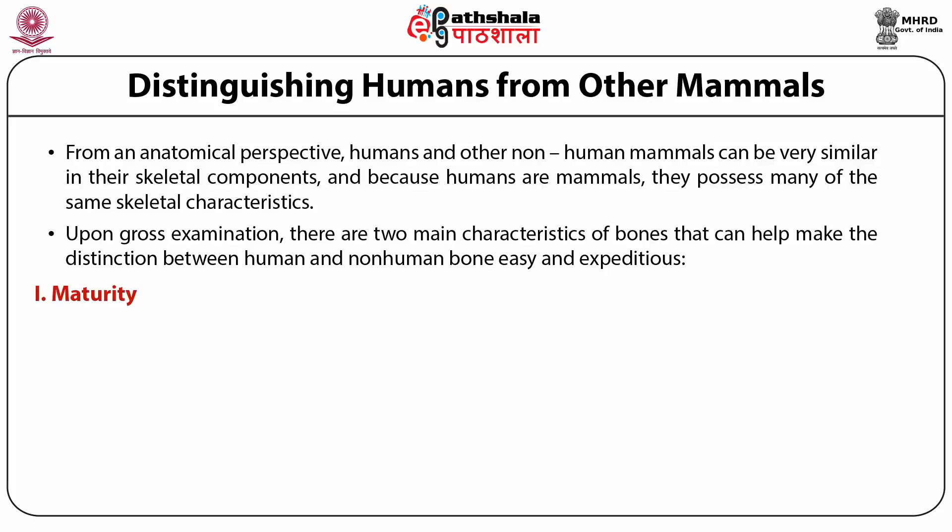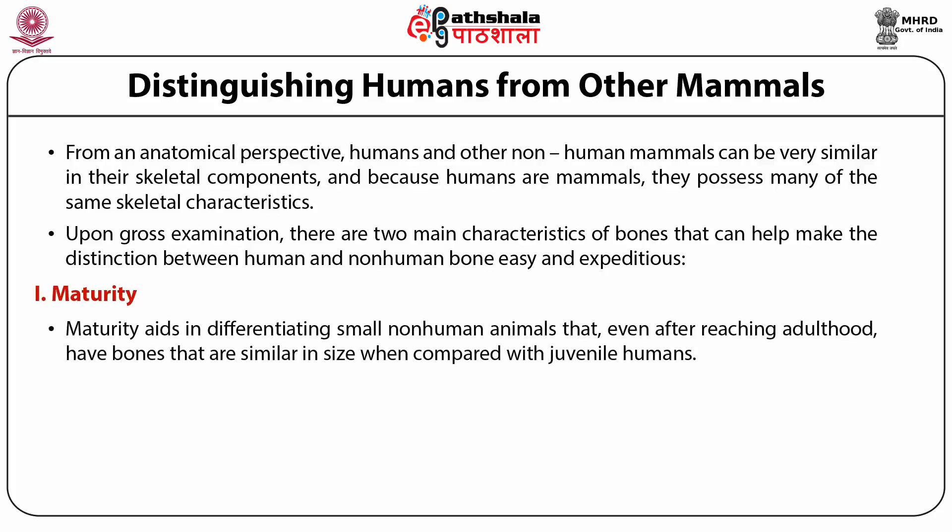Maturity aids in differentiating small non-human animals that, even after reaching adulthood, have bones similar in size when compared with juvenile humans. The most common human bones to be mistaken for animal bones are the bones of infants, which are sufficiently different from adult and even older children's bones that they can cause confusion.